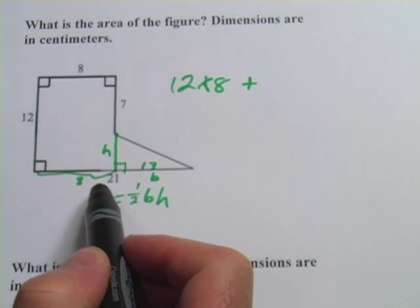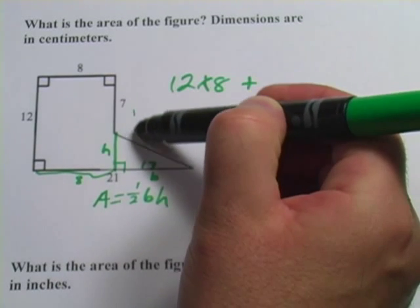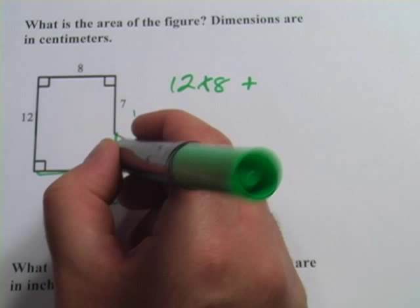Now for the height, we'll do it in a similar way. We know this whole side here is 12, and there's 7 here, so what must be left here is 5.